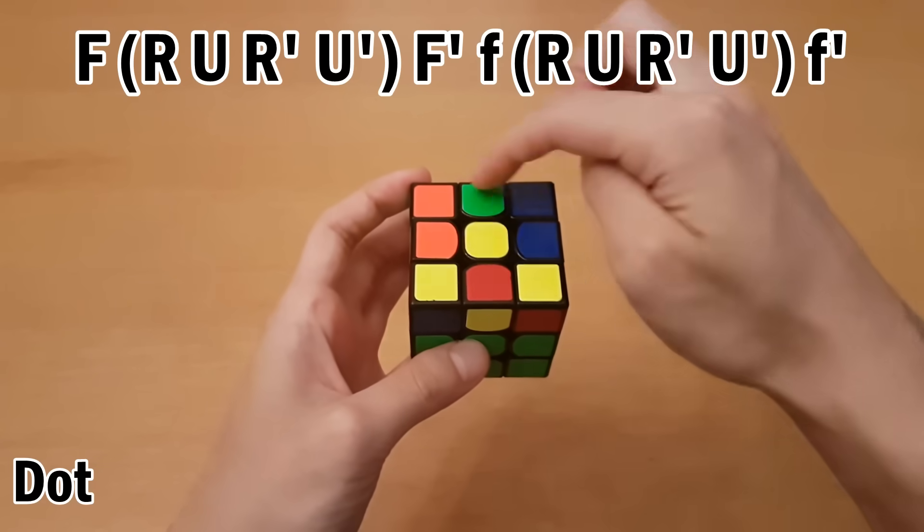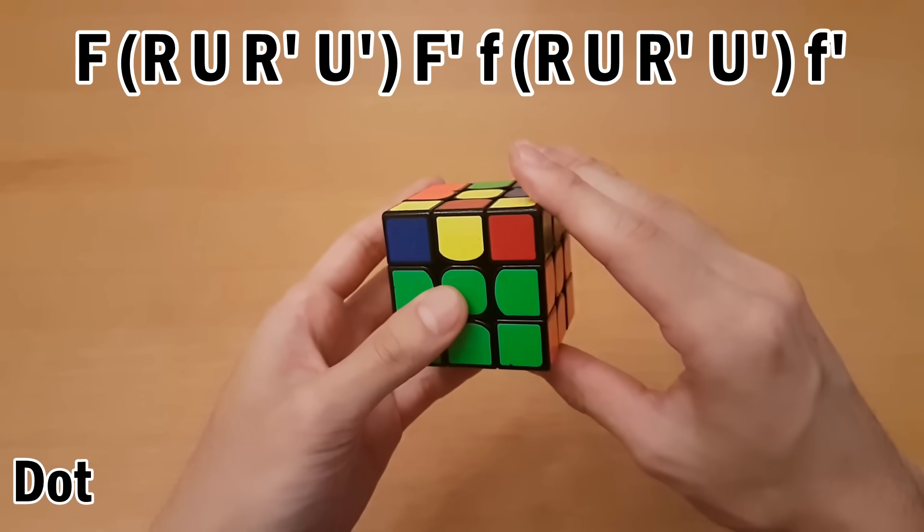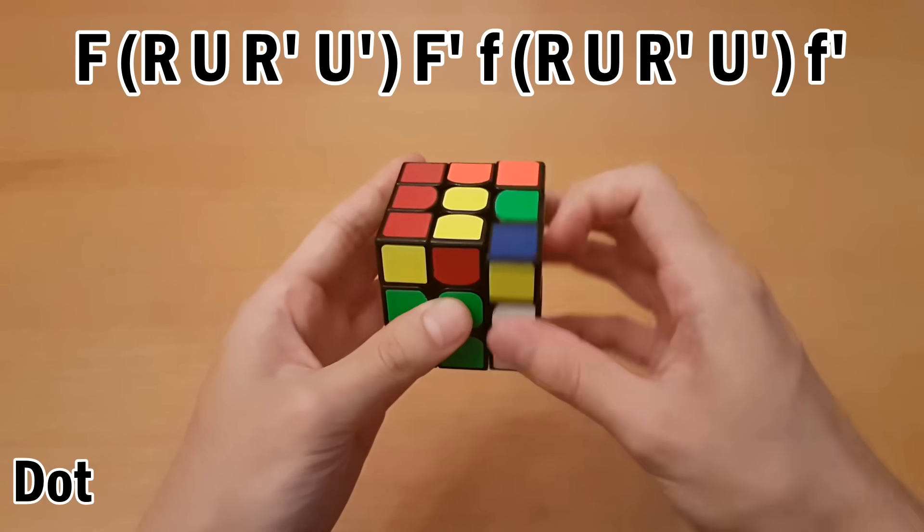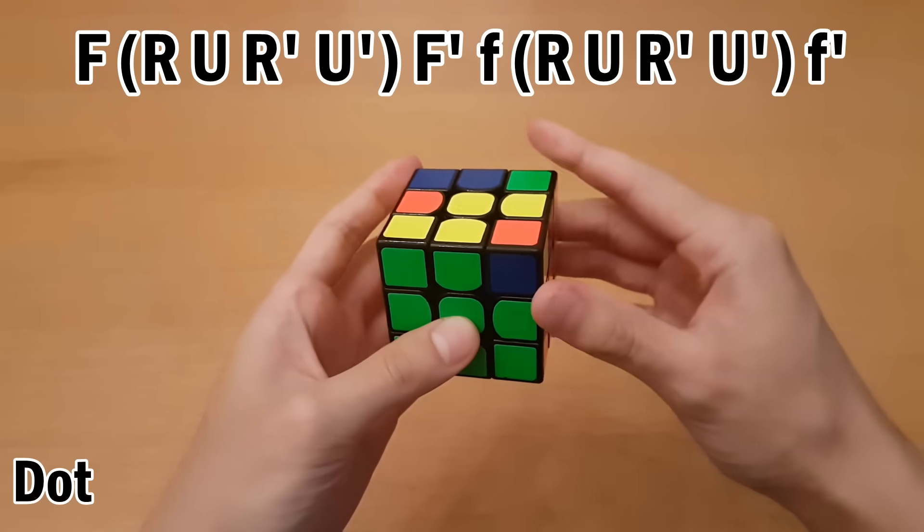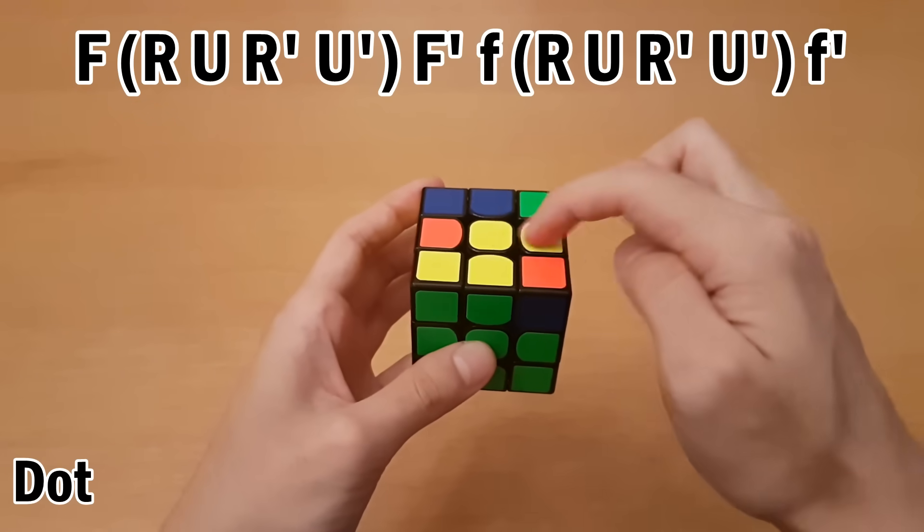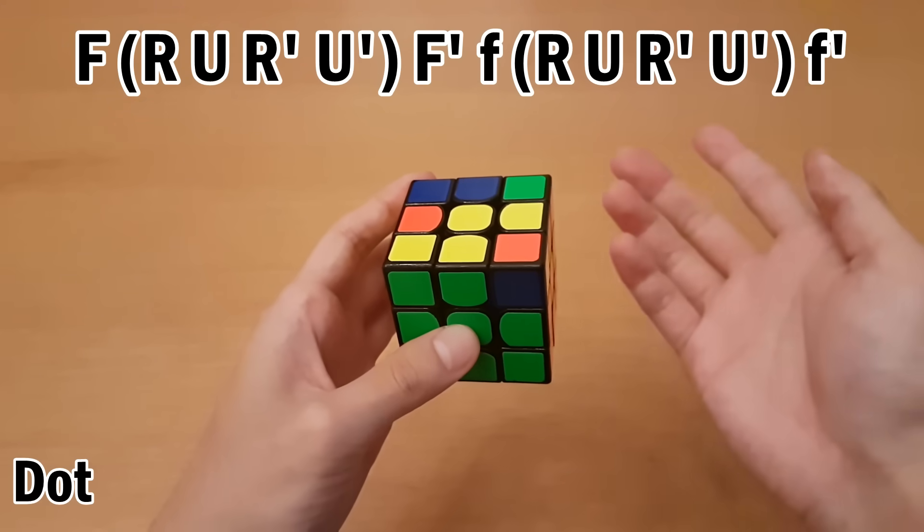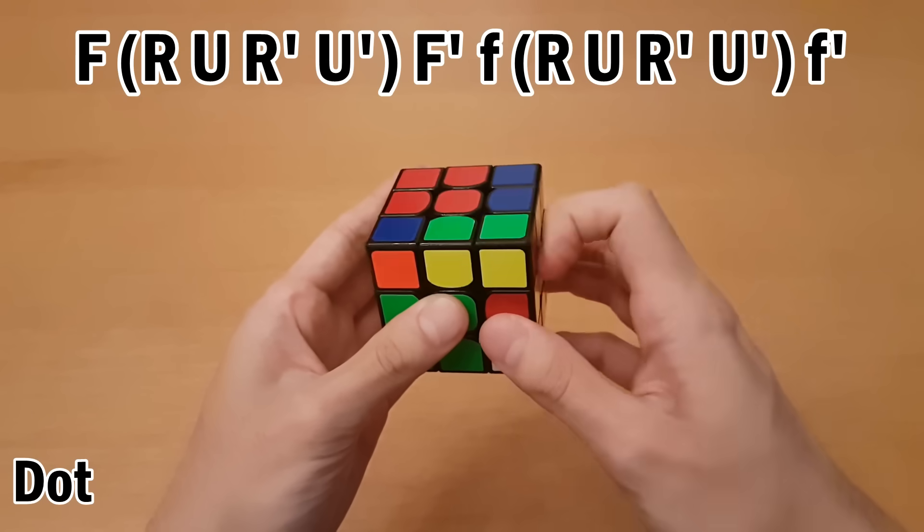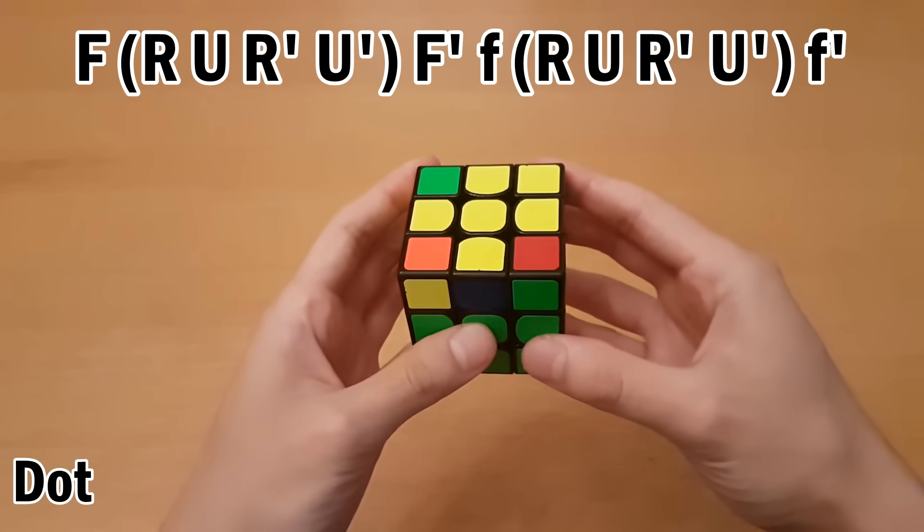If you get the dot with no edges, then you can just do the one for the horizontal line, which goes like this: front clockwise, R, U, R', U', front counterclockwise. And what that creates is this case. So all you have to do is do this case afterwards. So this is the wide move version, and that makes the cross.